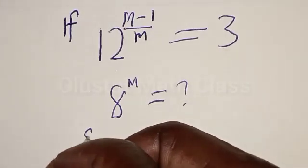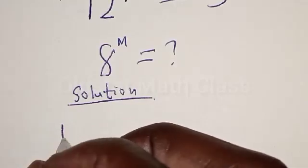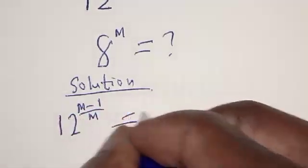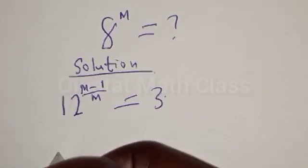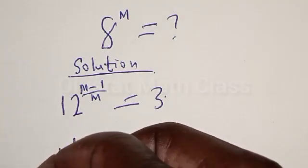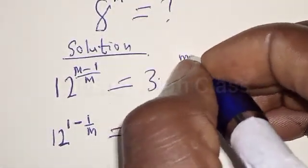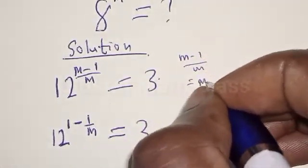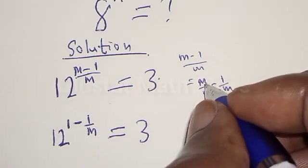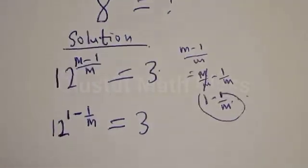Solution. We have 12 raised to power (m minus 1) divided by m equal to 3. This can be expressed as 12 raised to power (1 minus 1 over m) equal to 3. That is, m minus 1 divided by m is the same as m over m minus 1 over m — this one cancels, giving us 1 minus 1 divided by m. So that is how we get this exponent.